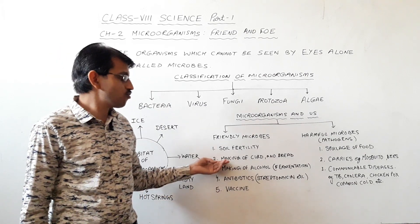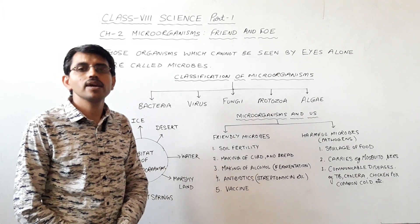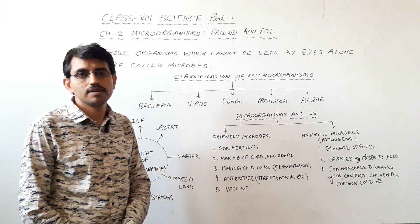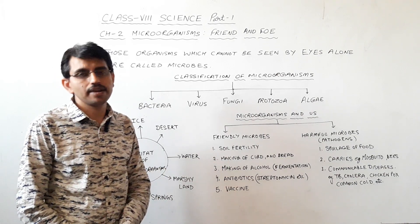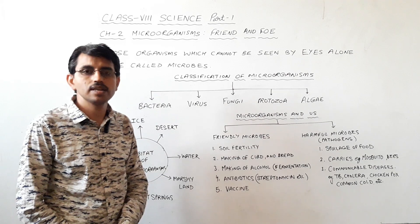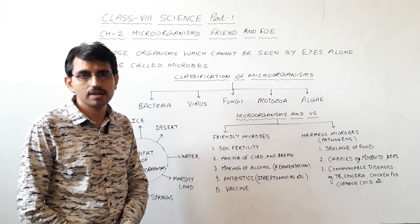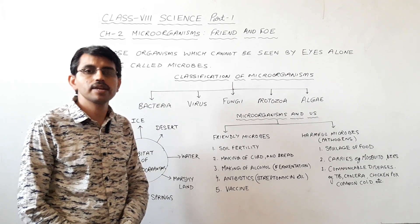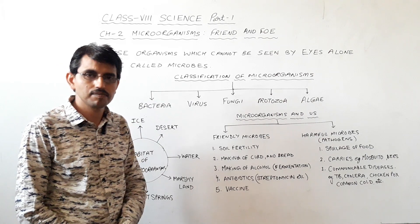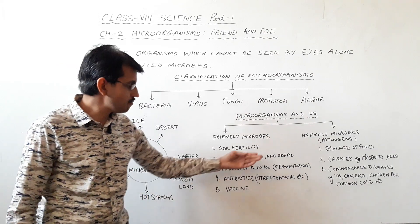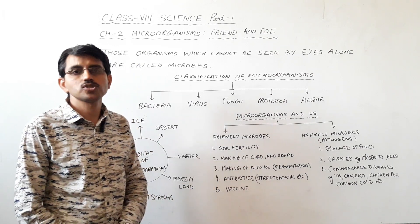The second friendly use is the making of curd and bread. The curdling of milk is because of bacteria — Lactobacillus bacteria, which are present in milk, convert milk into curd overnight. In the same way, yeast is used for the preparation of bread.